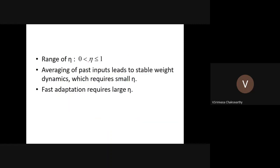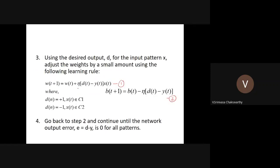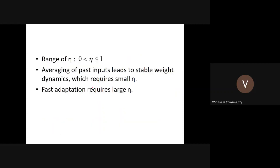Eta defines the step size — by how much do the weights vary in one iteration. Eta is usually taken to be a value between zero and one. The trade-off is: if you use a very large eta, learning could be faster but it can lead to instability. If you use a very small eta, it is stable but proceeds very slowly. So eta must be between zero and one; you can choose a value slightly closer to one so that learning is fast enough.